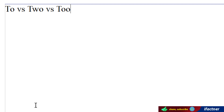Dostoon, aaj ke iFactner ke video tutorial mein hum TO, TWO, aur TOO — jo English ke words hain — unke meanings ko samjhenge, aur unko sentences mein use karna seekhenge, aur un sentences ki translation ko samjhenge. Is tutorial ke baad, aap in tino words mein agar confused hotay hain, to confused nahi hongay. Toh shuru kertay hain aaj ka video tutorial.